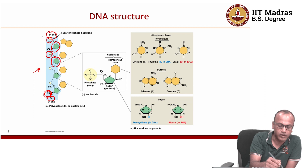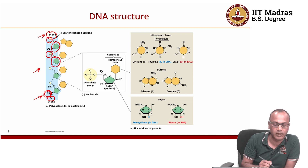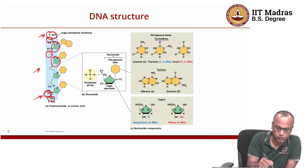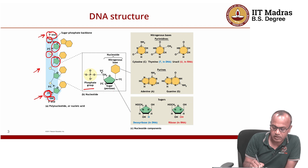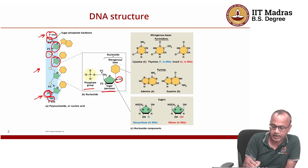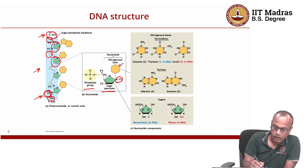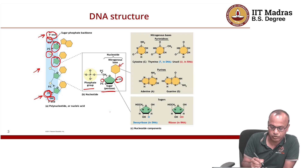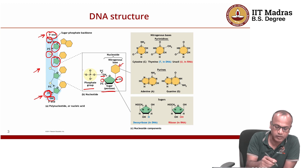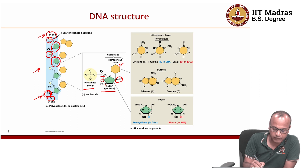All DNA strands have one 5-prime end and one 3-prime end. Looking deeper at the structure, there is a phosphate group and a 5-carbon pentose sugar, which is a ring-shaped sugar molecule. On the first carbon, one of the four nucleotide bases — A, T, C, or G — is attached. On carbon 4 or carbon 5, the phosphate group is attached, forming the 5-prime end, while the hydroxyl group on the third carbon forms the 3-prime end.